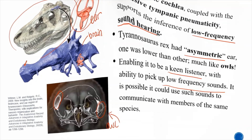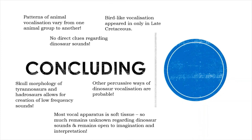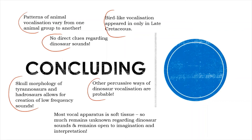Concluding: patterns of animal vocalization vary from one animal group to another. There is no direct clue regarding dinosaur sounds, but bird-like vocalization appeared only in the Late Cretaceous. Skull morphology of Tyrannosaurus and hadrosaurs allows for the creation of low-frequency sounds, but other percussive ways of dinosaur communication are also probable. Most vocal processes are soft tissue, so much remains unknown regarding dinosaur sounds — and remains open to imagination and interpretation, which leads us very nicely into the sound design of the game.